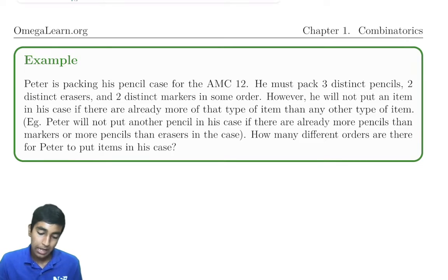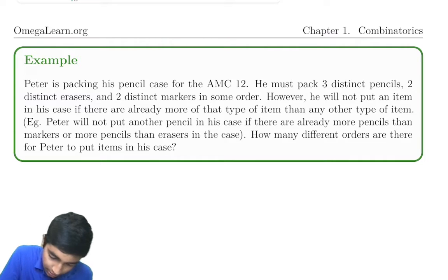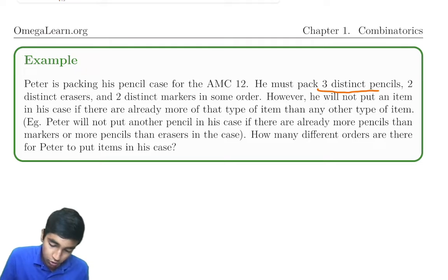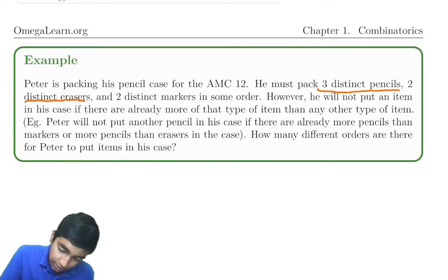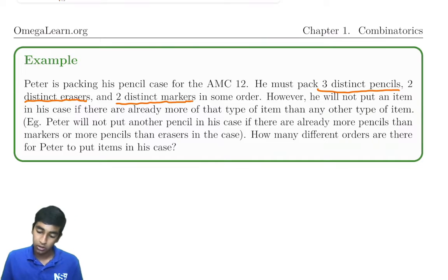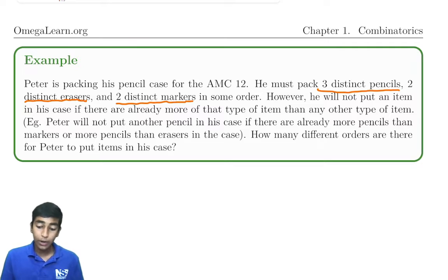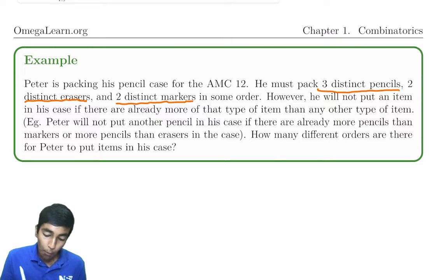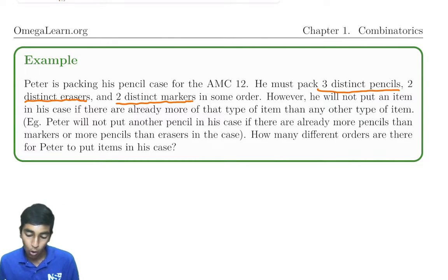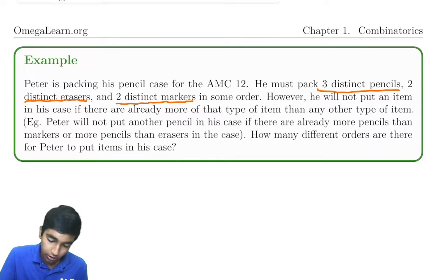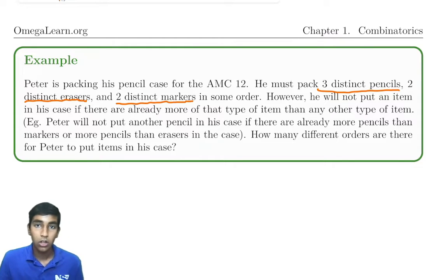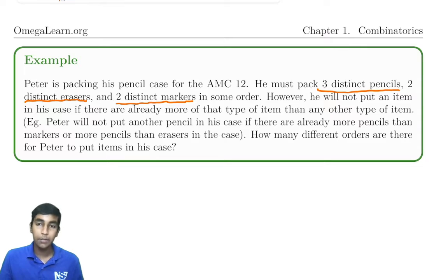Now let's start with an example. Peter is packing his pencil case for the AMC 12. He must pack 3 distinct pencils, 2 distinct erasers, and 2 distinct markers, in some order. However, he will not put an item in his case if there are already more of that type of item than any other type of item. So how many different orders are there for Peter to put the items in his case?